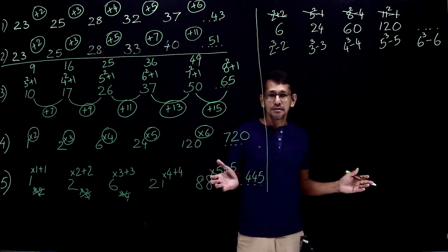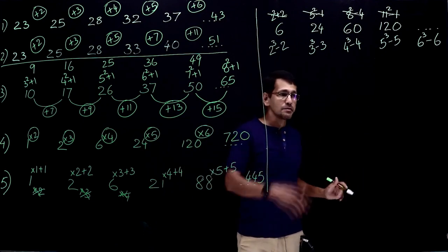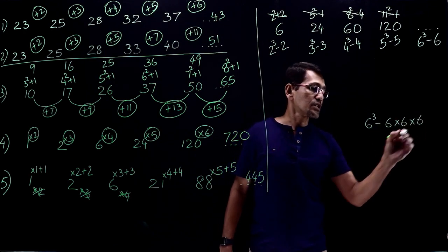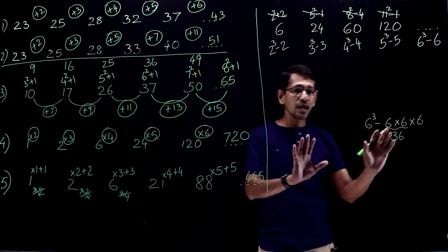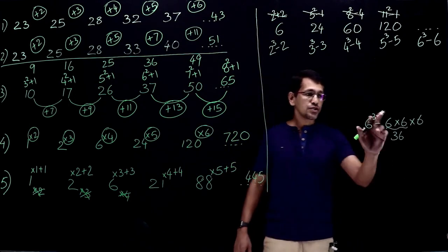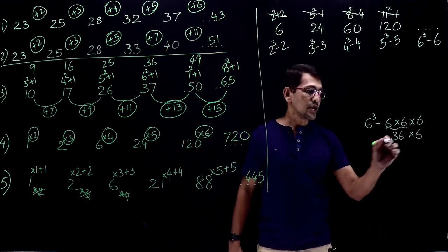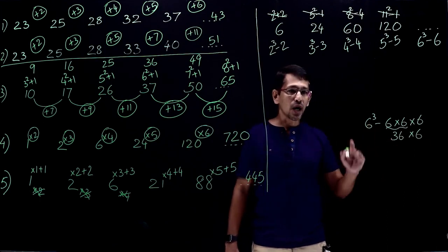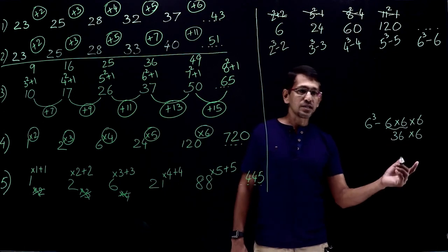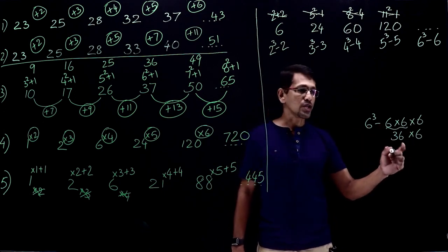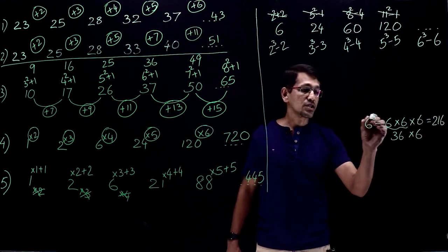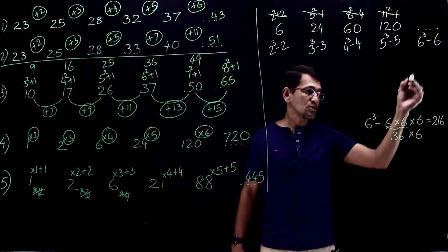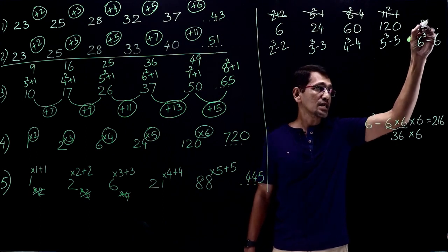Well, either you can learn it by heart, there's no harm in learning by heart, however, it's a better method. Look at the 6 cube, 6 cube is 6 into 6 into 6, 6 into 6 is 36. These are all mental calculations. So 6 into 6 is 36, 36 into 6, 30 into 6 is 180, 6 into 6 is 36, 180 plus 36. 180 plus 20 is 200. From 36 we have taken 20, the balance is 16, so the answer is 216. 6 cube is 216, so the answer must be 6 cube minus 6, so that is 216 minus 6, that is 210.